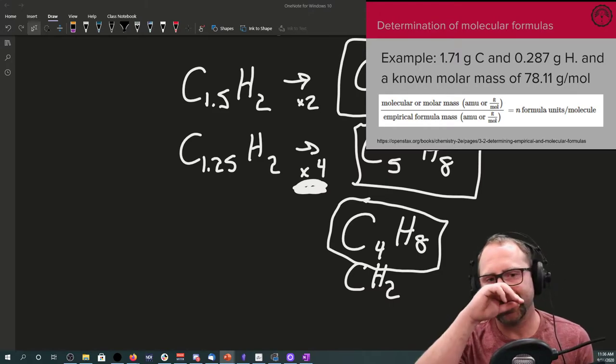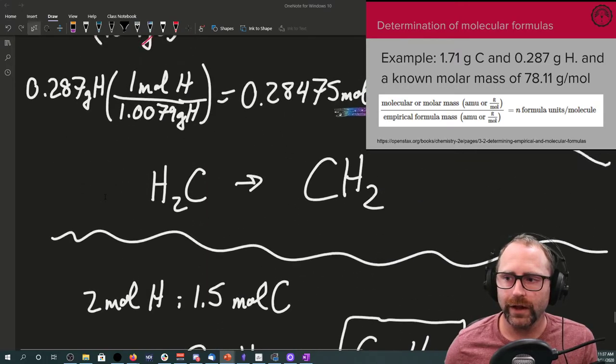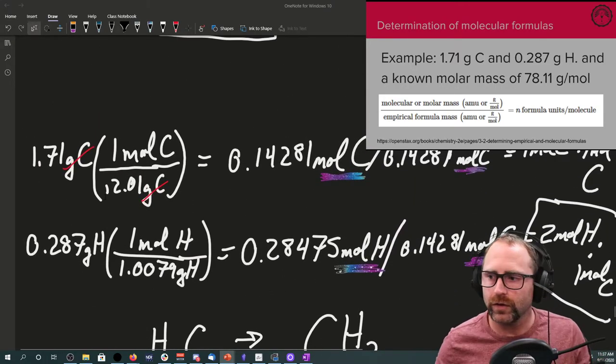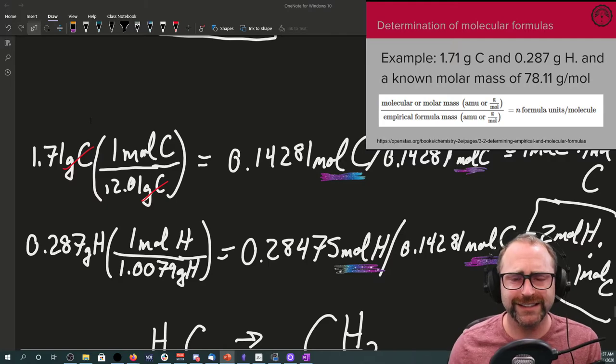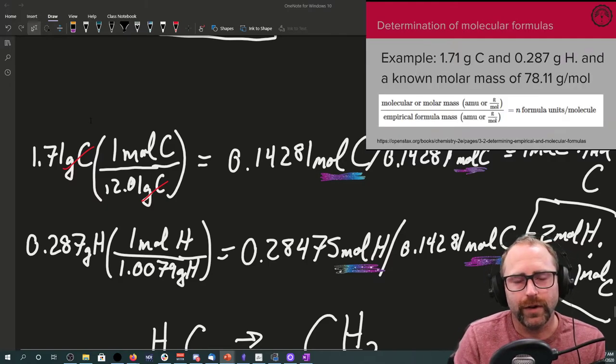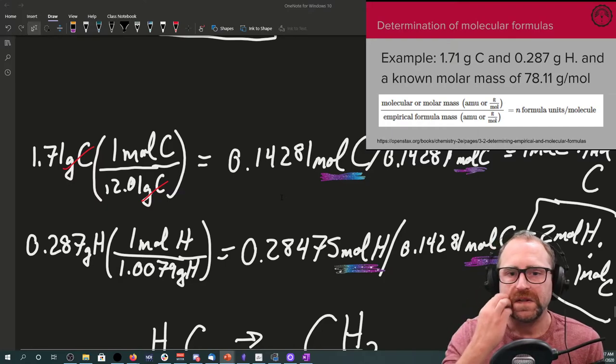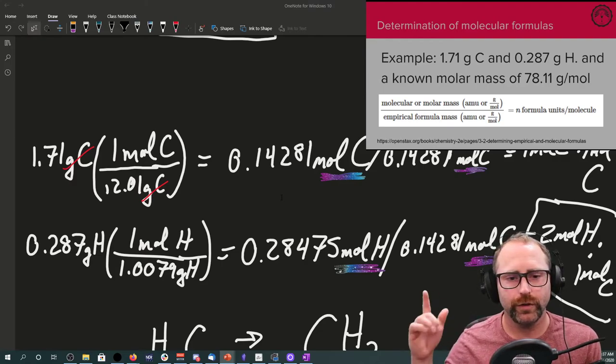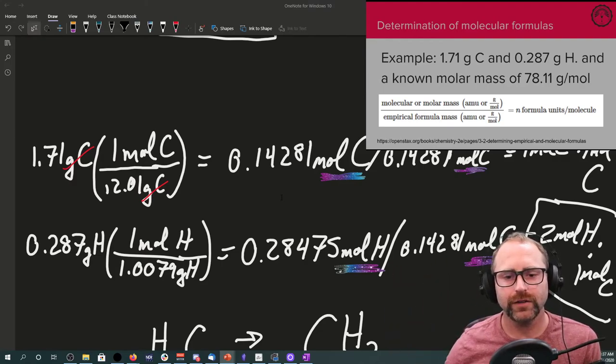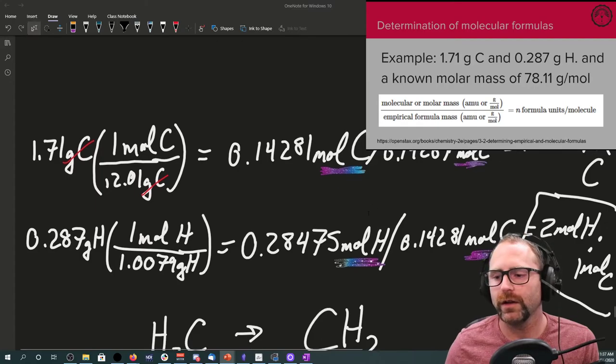So, the molecular formula, let's go ahead and let's solve this problem here real quick too. The molecular formula is a situation where now a little bit more information is given to you. In this case, it's the same number with respect to the mass of carbon and the hydrogen. It's just now telling you what the molar mass of your species is.